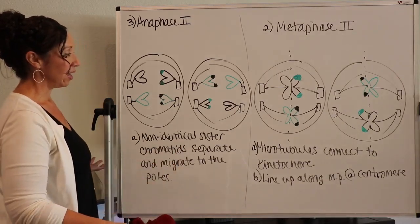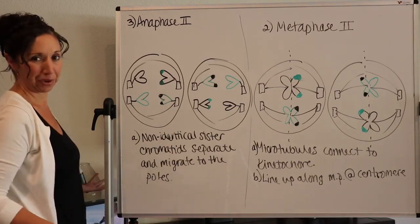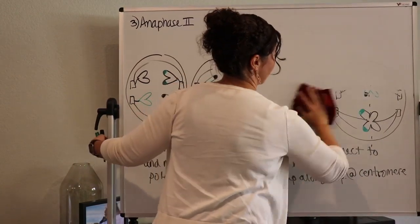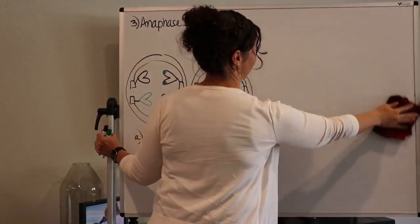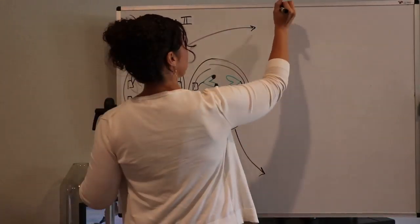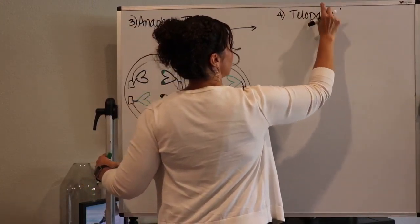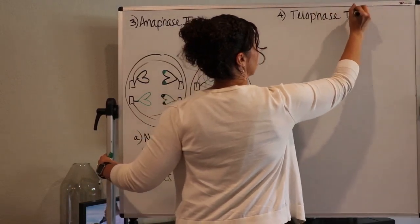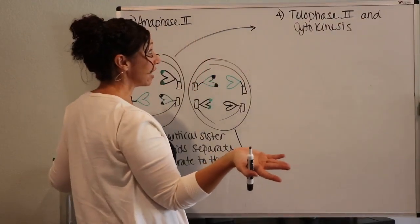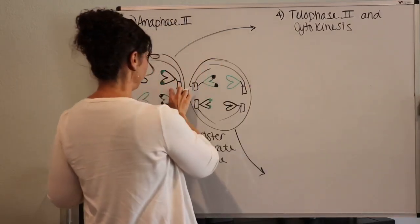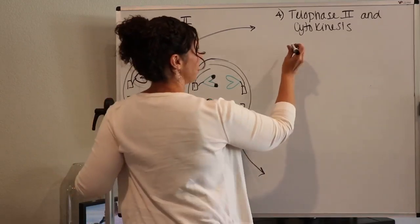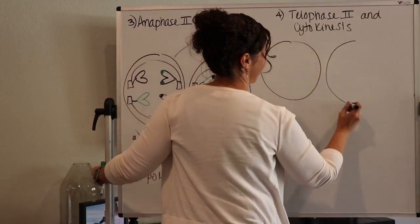So I hope you don't mind. I started writing a little bit of detail under each one. But you know the story now, which is wonderful. You can kind of lead the story if you wanted to. So the last phase, I need a little extra room here, because now we've got to make four cells. So I'm going to put this cell over here, and this cell I'm going to split down here. So this will be number four, telophase II and cytokinesis.